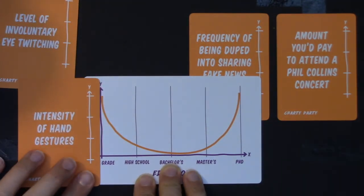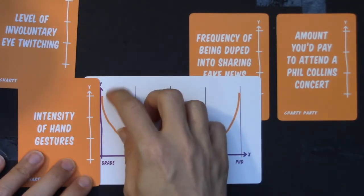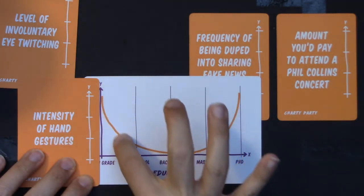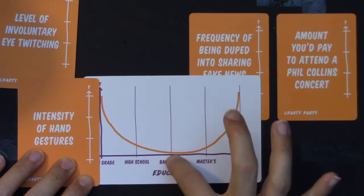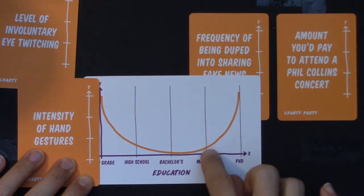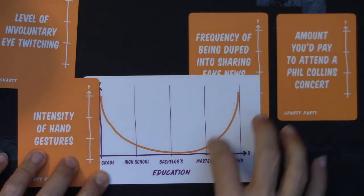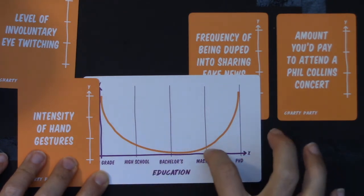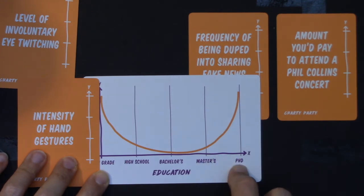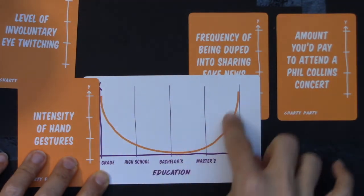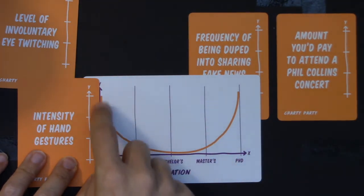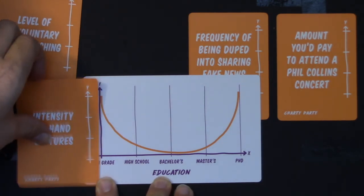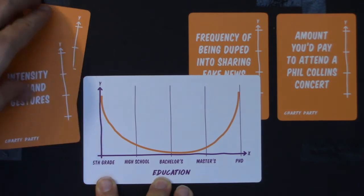Intensity of hand gestures — think about when you were in fifth grade, maybe your hand gestures were really intense. Then by the time you got to high school, not such a big deal; bachelor's degree, not so high intensity. And then maybe as you started getting more advanced degrees and meeting more master's and PhD folks, your intensity did get a little higher — a more firm handshake because you're meeting all these other doctors. Maybe this could work. I don't really know about handshake intensity for fifth graders, but I like hand gestures more than eye twitching, so I'm keeping this one on top.